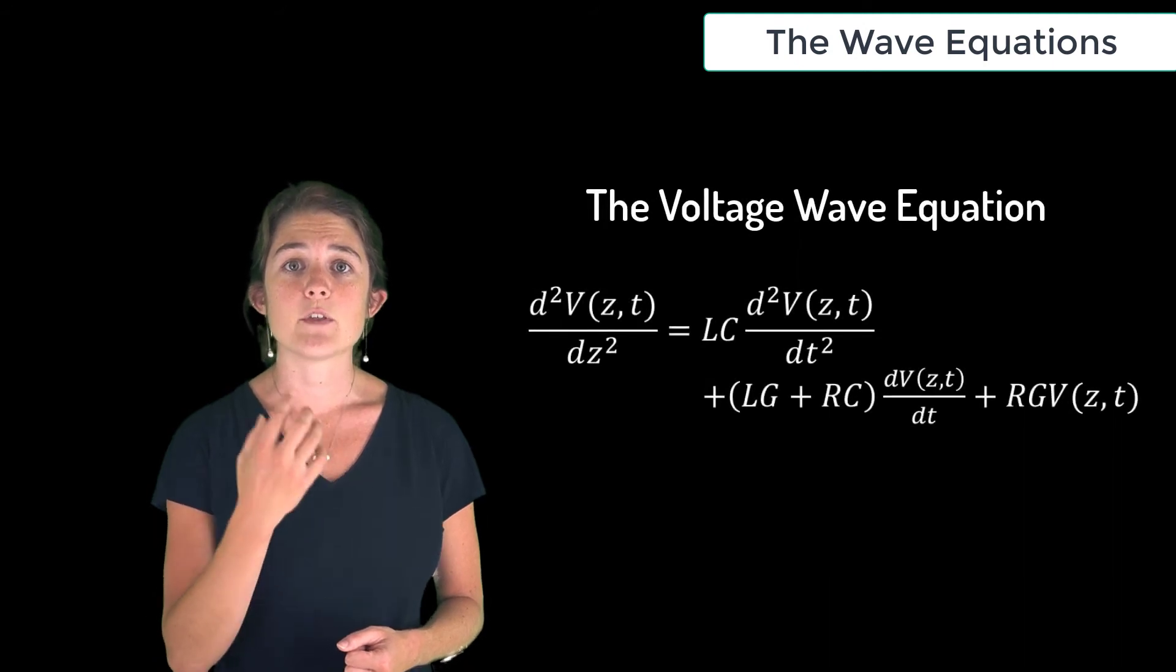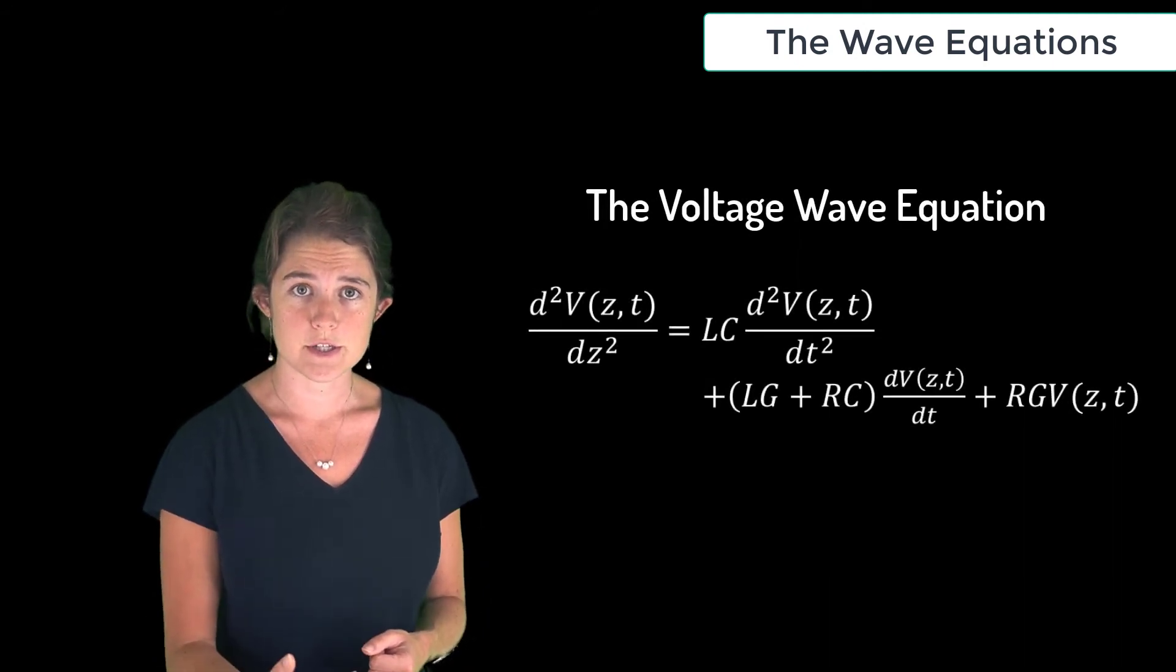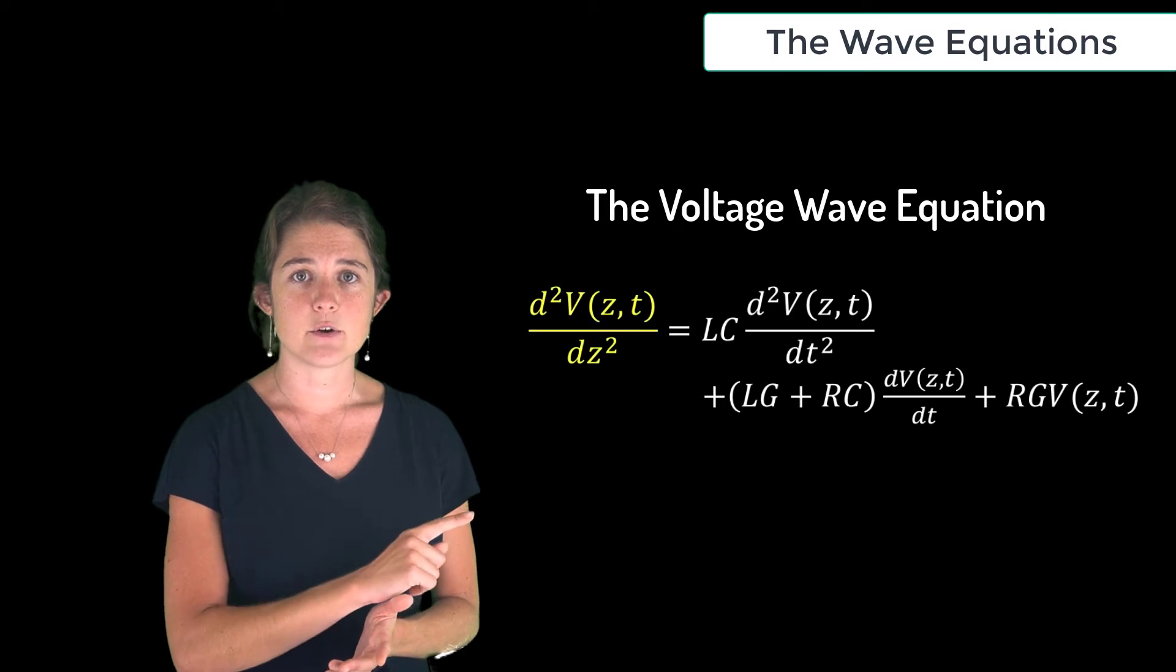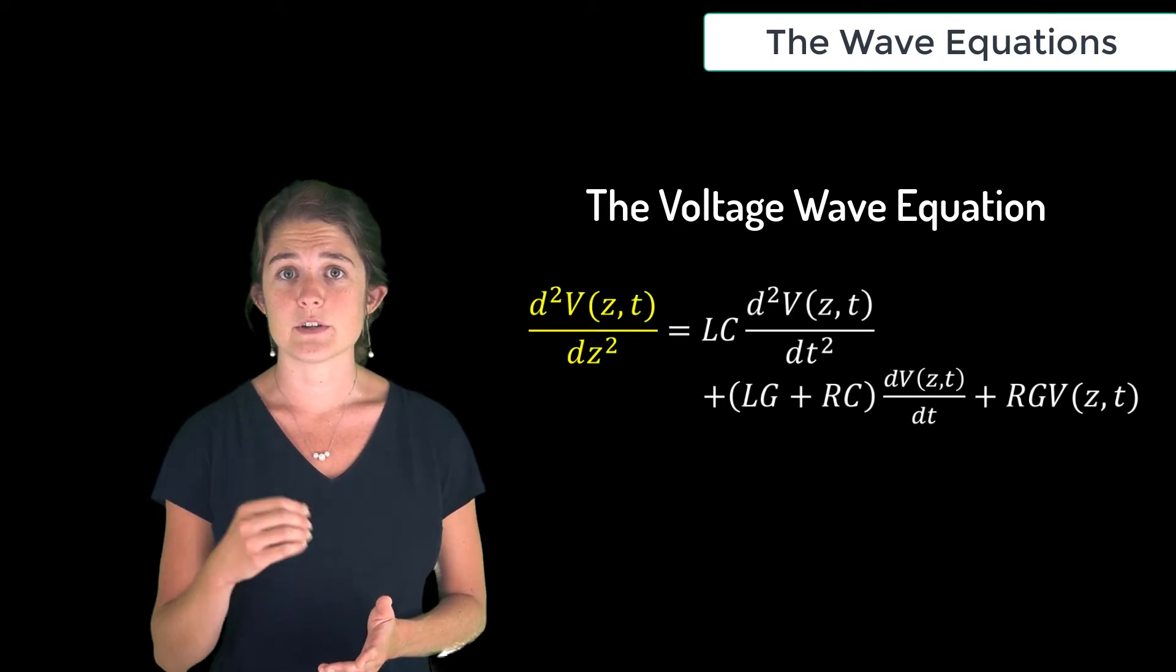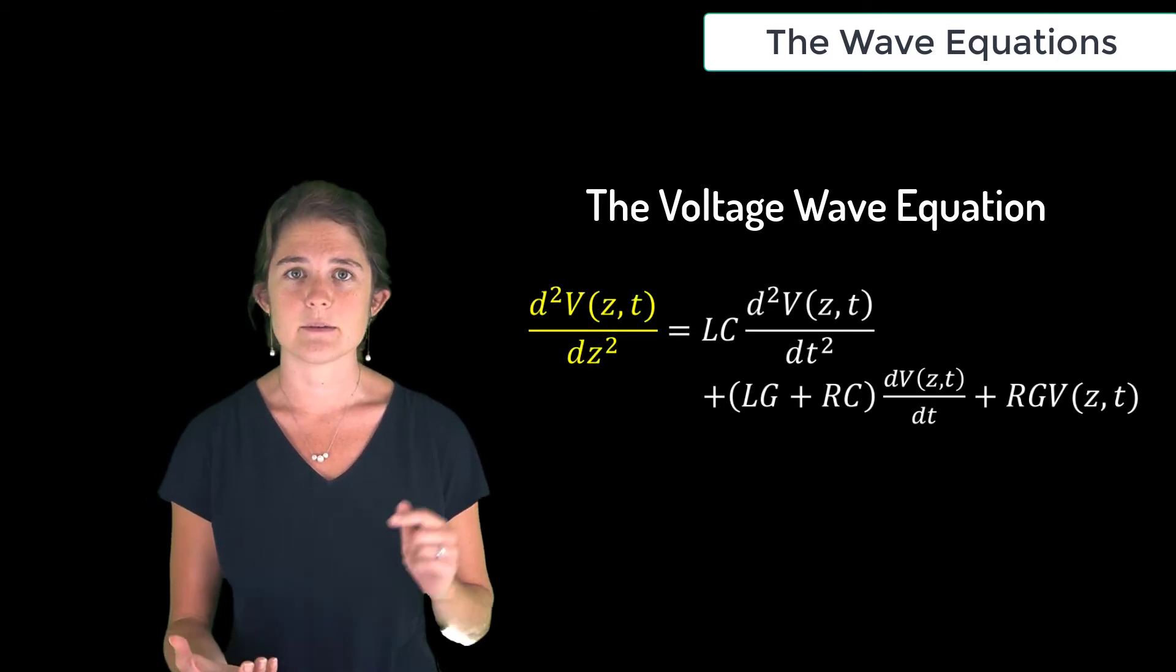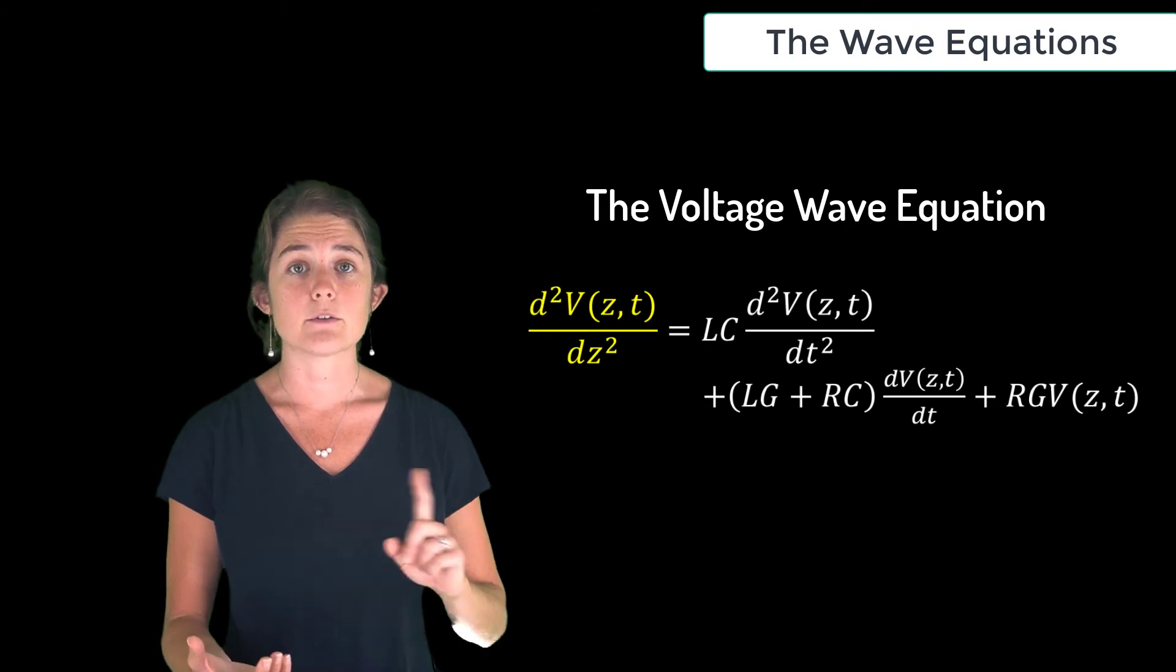Notice that on the left hand side of the equation we have a second derivative with respect to space, as represented by the z variable, and on the right hand side we have a second derivative with respect to time.